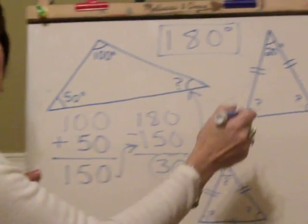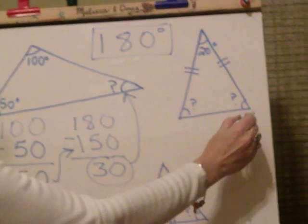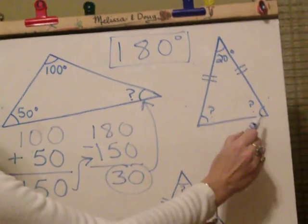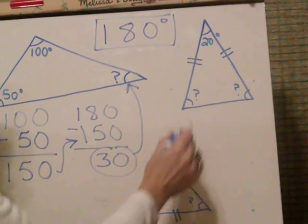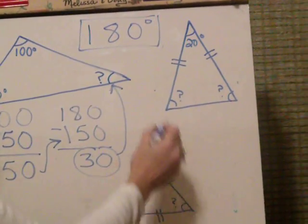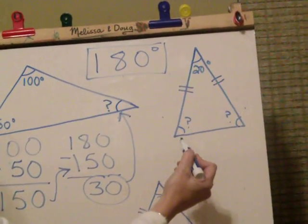Now for an isosceles, which means it has two equal sides and one different side, it also has two equal angles. And I know they all add up to 180. So to solve for one of the mystery angles,